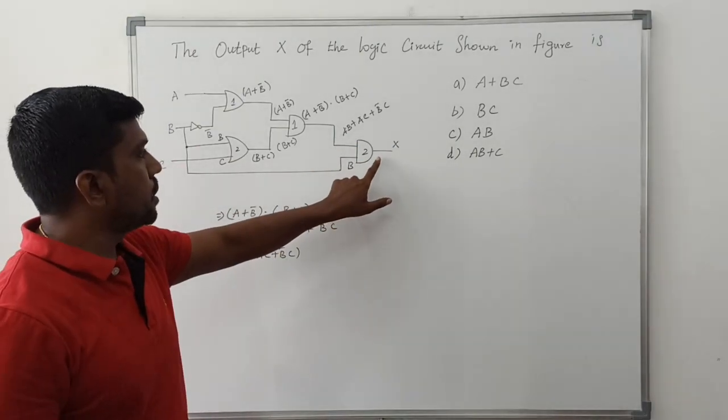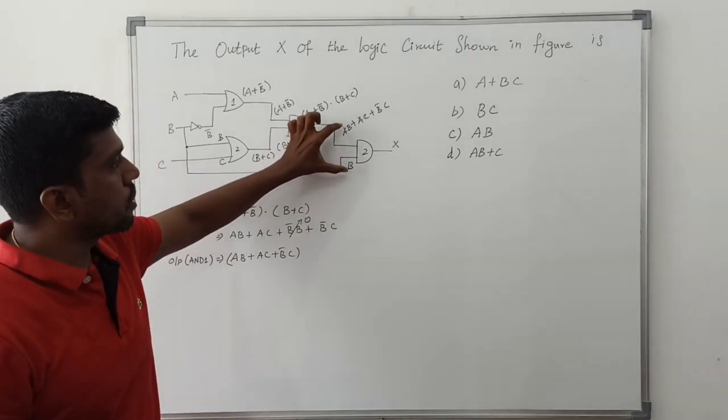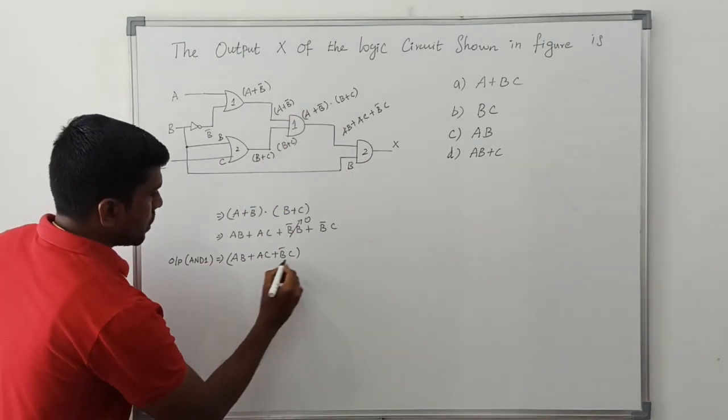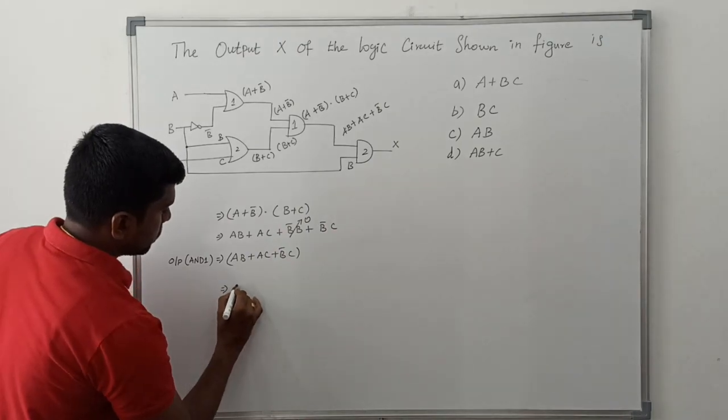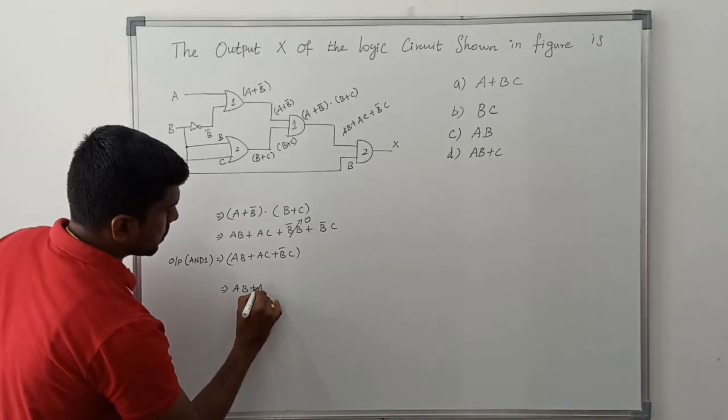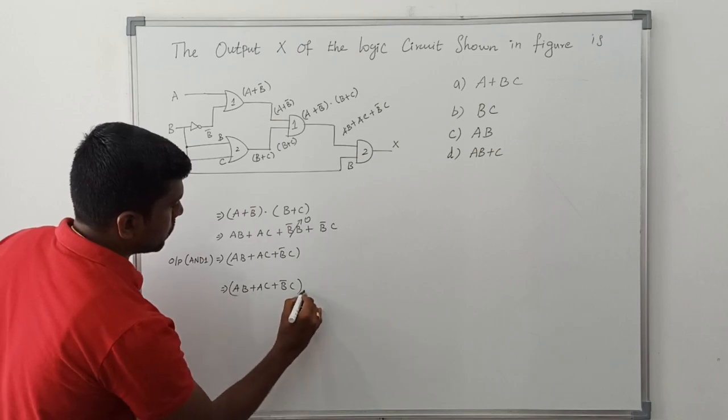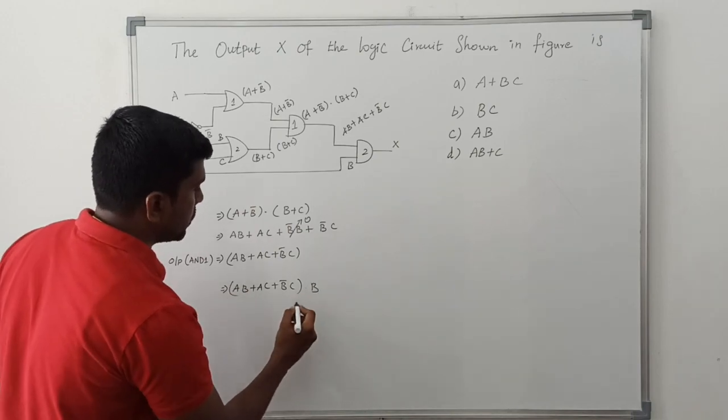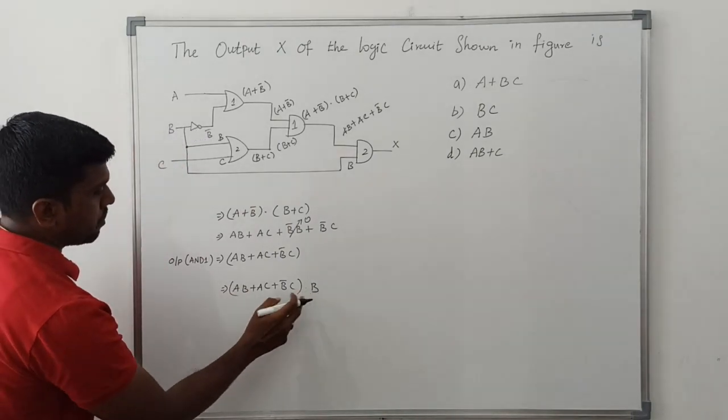So output of second AND gate, just taking product of these two terms. This value AB plus AC plus B bar C is multiplied with B. Just taking product with B.